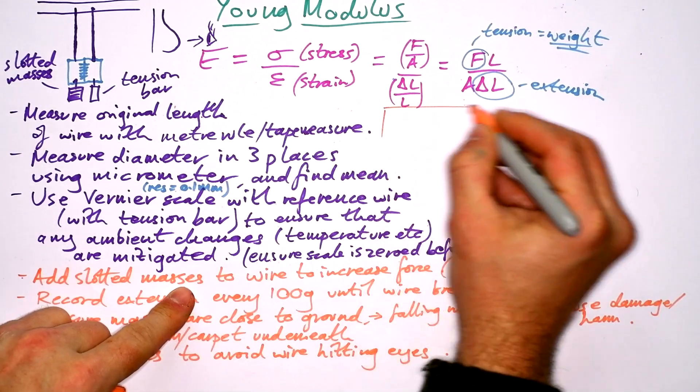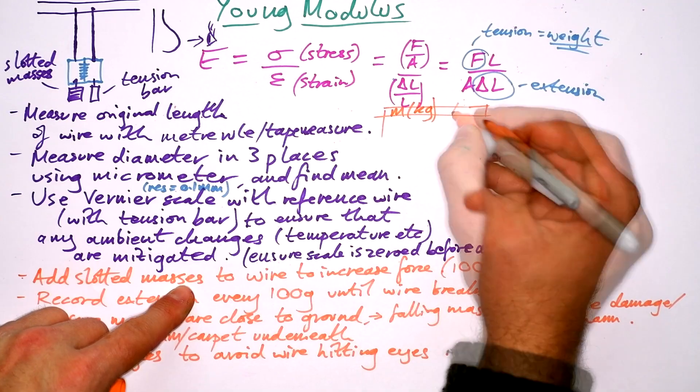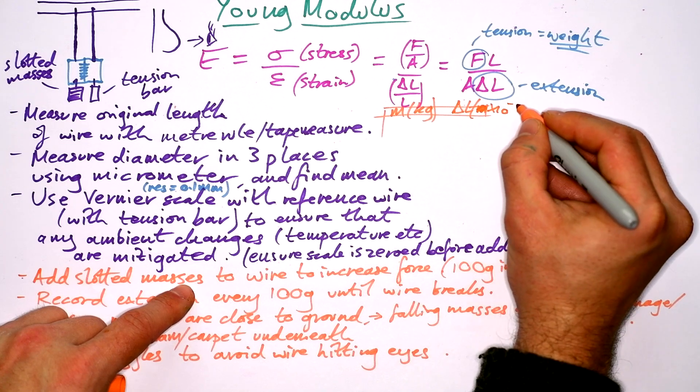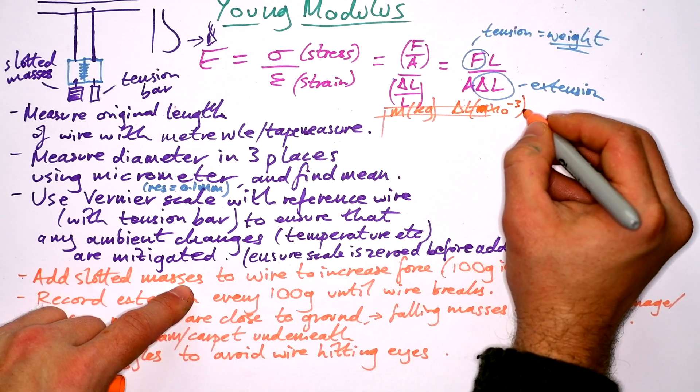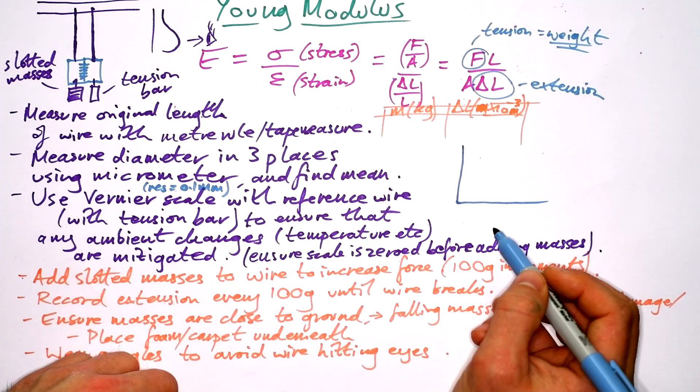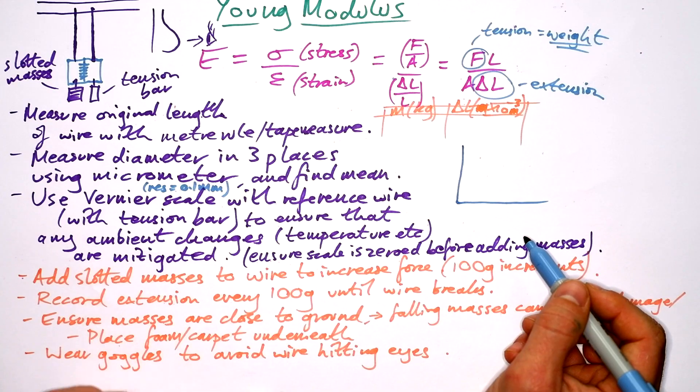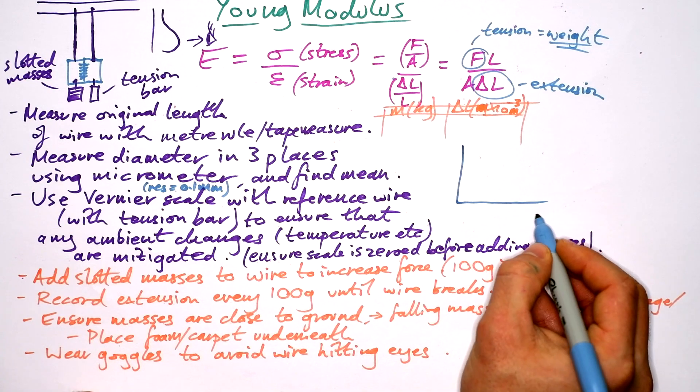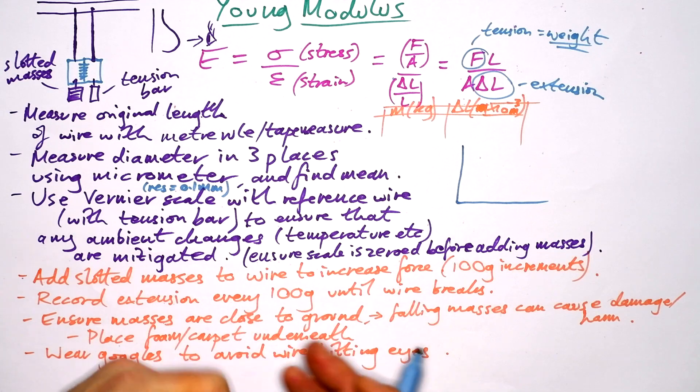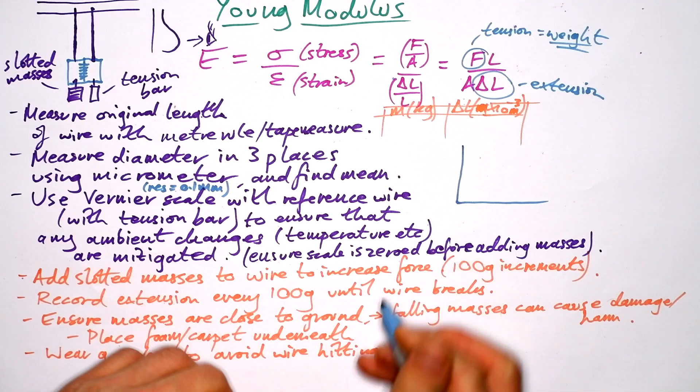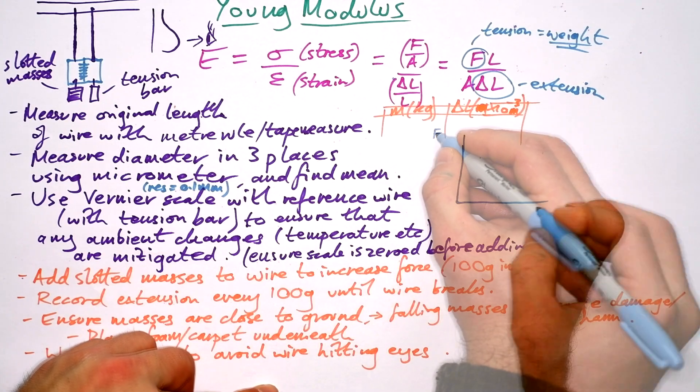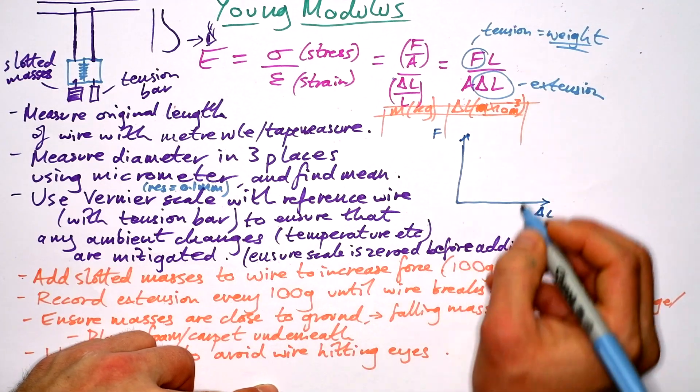So you're going to be recording mass in kilograms and you're going to be recording the extension. Chances are it's going to be times 10 to the minus three meters. Now, when you plot a graph of this, there's a couple of ways you can do it. Yes, obviously force is our independent variable or masses. And so you might want to put force or mass on the x-axis, but actually, yeah, we can put the independent variable on the x-axis. But actually in this case, it makes more sense to put force up the y-axis like that and the extension on the x-axis.